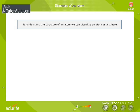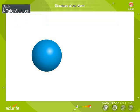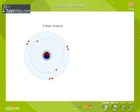To understand the structure of an atom, we can visualize an atom as a sphere. The atom has two major divisions. In the center of the atom, there is a nucleus.